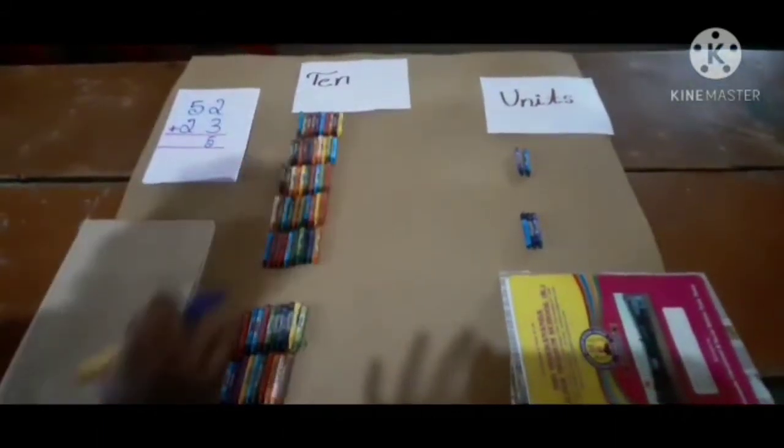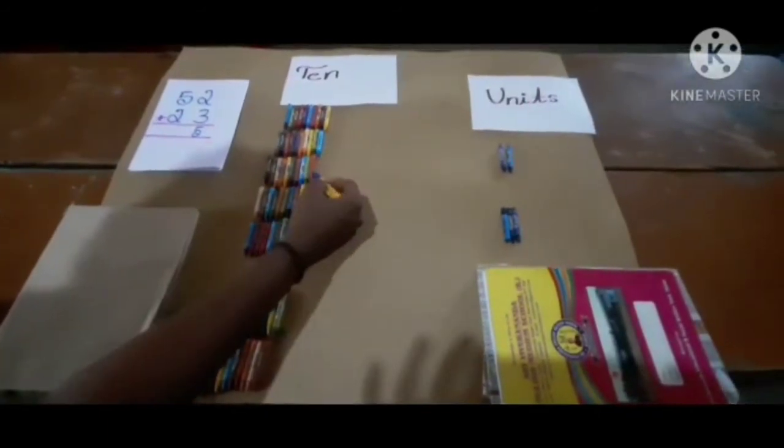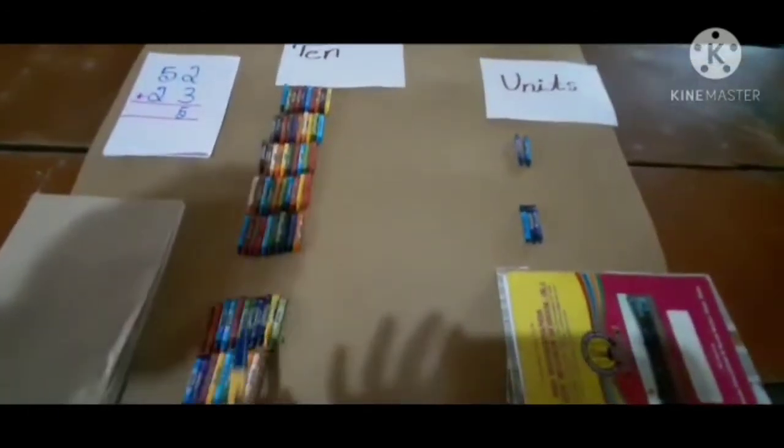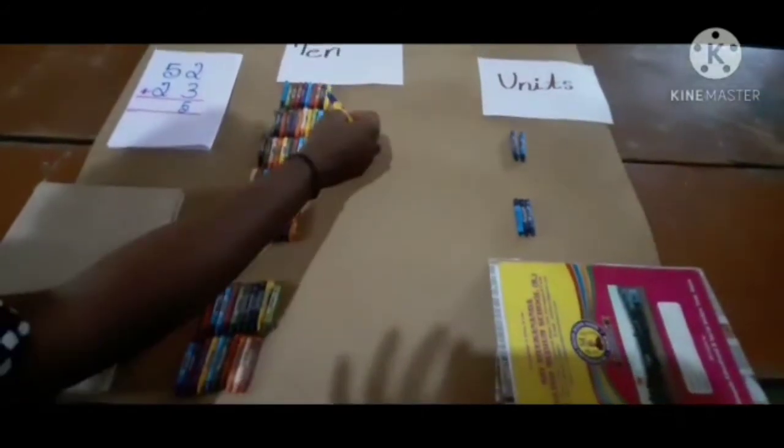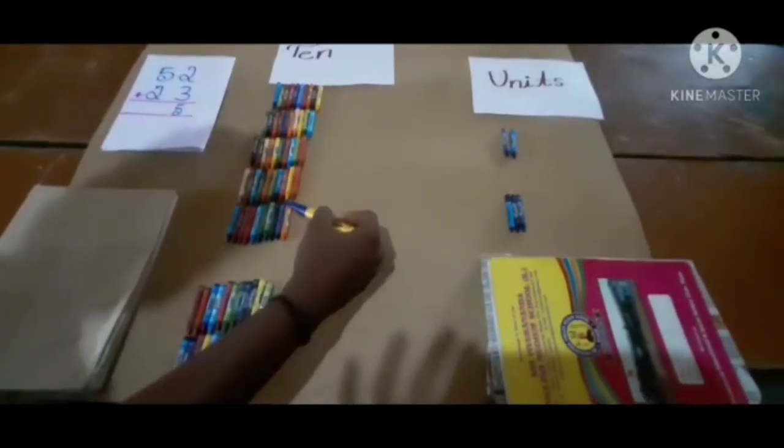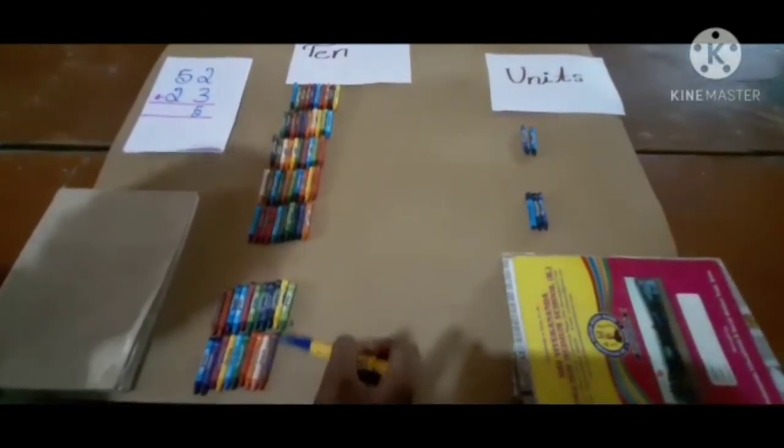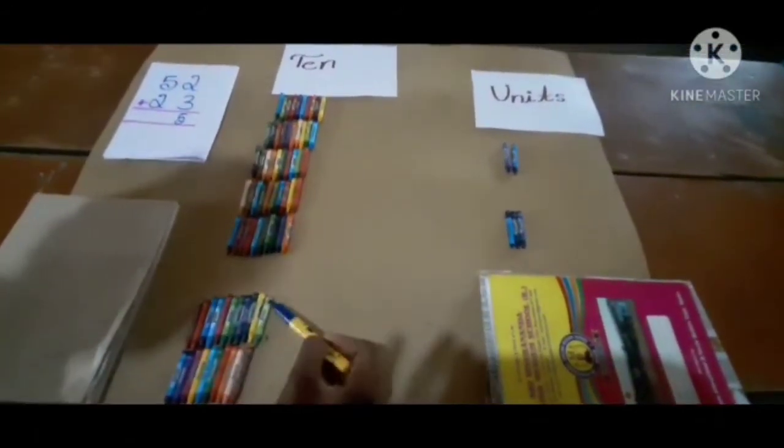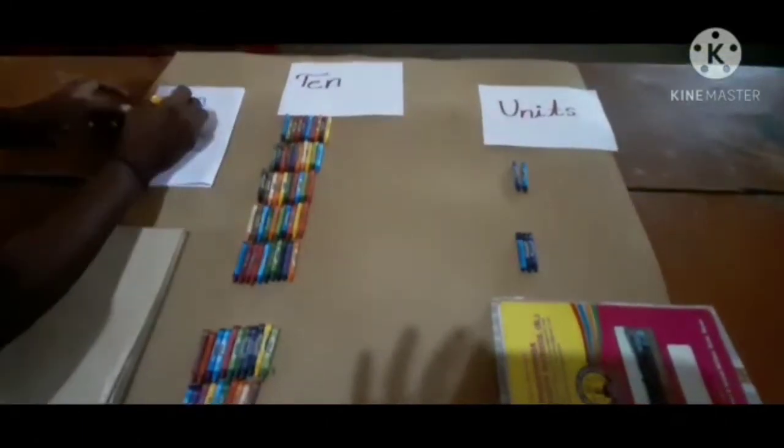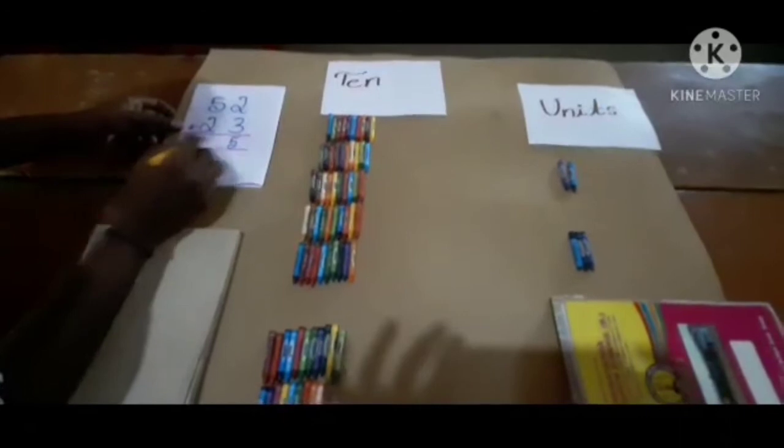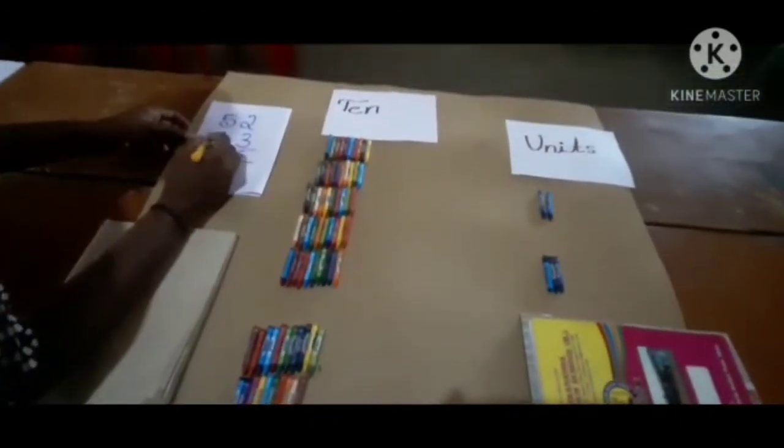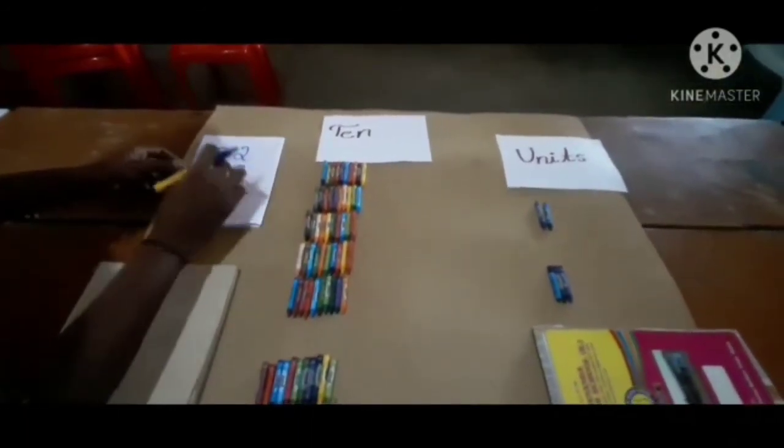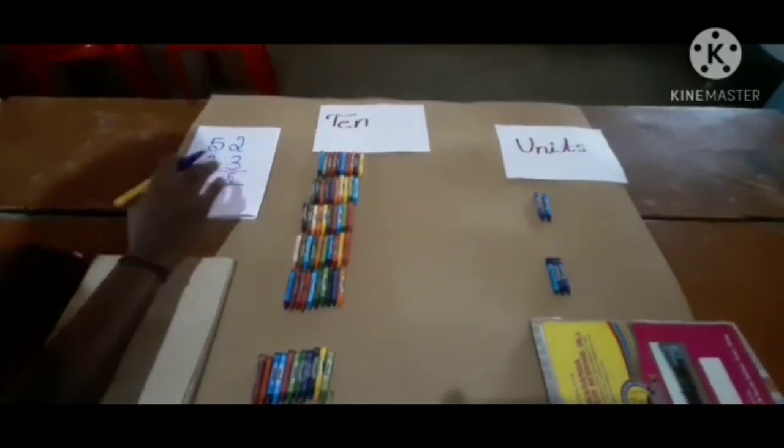Now, count tens. Here 5 tens: 1, 2, 3, 4, 5. Each line 10 crayons. 5 tens plus 2 tens: 1, 2. Count now: 1, 2, 3, 4, 5, 6, 7. 7 tens. 1 ten, 2 tens, 3 tens, 4 tens, 5 tens, 6 tens, 7 tens. 5 plus 2, 7. 52 plus 23, 75.